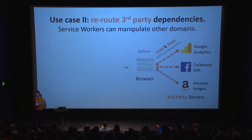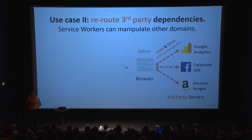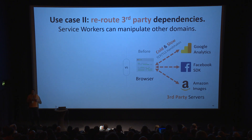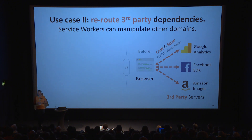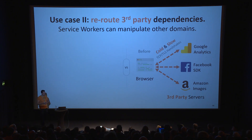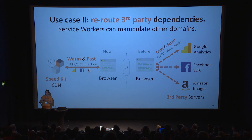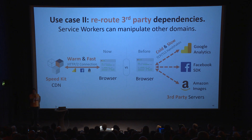Another interesting use case: service workers can manipulate third-party resources. Say you host a service worker on mydomain.com and include JavaScript from Facebook SDK, Google Analytics, and images from an Amazon API. Normally the browser establishes a TCP connection to each domain, does a TLS handshake (typically two round trips), and DNS beforehand — a very long dead phase before anything useful happens. With service workers you can say 'this is a request for Google Analytics JS and I know this file is moderately cacheable, so I rewrite it to a different domain I already have an open connection to.' For the browser it looks like it requested Google Analytics, but in the service worker we actually went to a totally different domain.